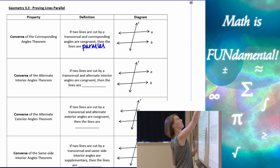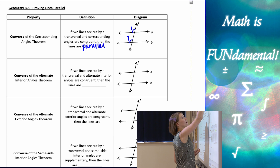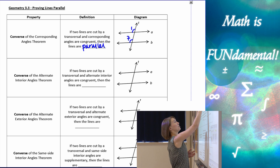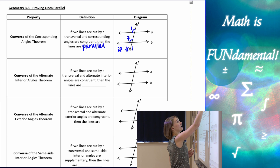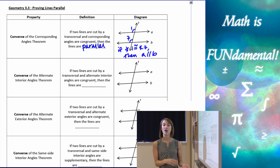For example, if I was given that angle one is congruent to angle seven — those little arc marks mean that they're congruent — so if angle one is congruent to angle seven, then I can state that A is parallel to B using the converse of the corresponding angles theorem.